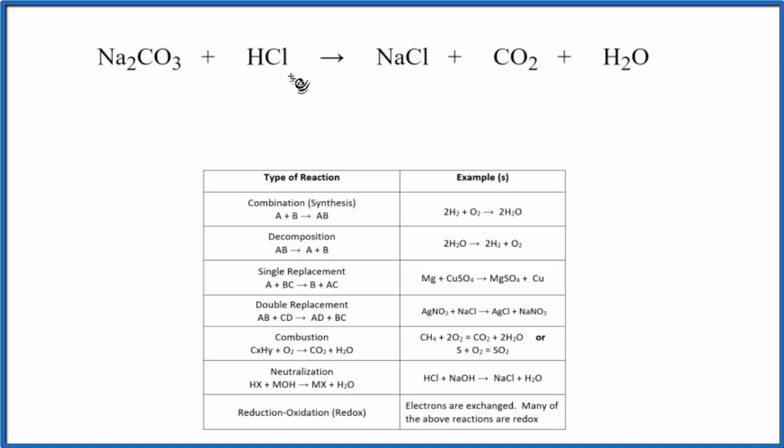This reaction is a combination of two different reactions that happen when we put sodium carbonate and hydrochloric acid together. So first, what'll happen is we'll get sodium carbonate and hydrochloric acid. They'll come together to make the NaCl, but something called carbonic acid, H2CO3.